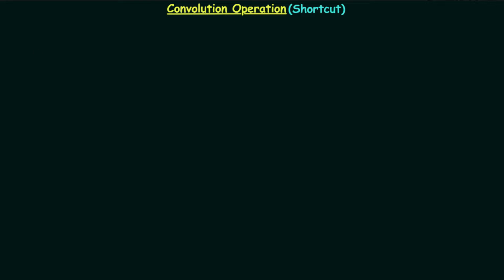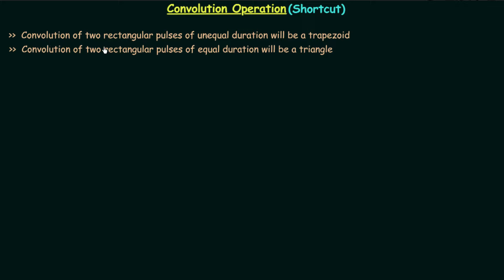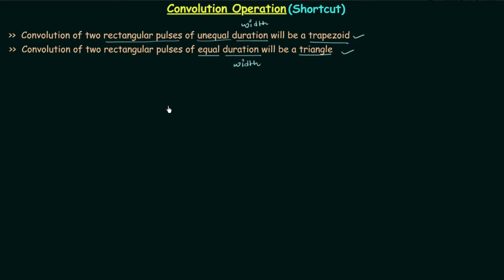If you remember, convolution of two rectangular pulses of unequal duration or unequal width will be a trapezoid, and convolution of two rectangular pulses of equal duration or equal width will be a triangle. In this presentation we will try to find out the exact waveform which you will get after performing the convolution operation.